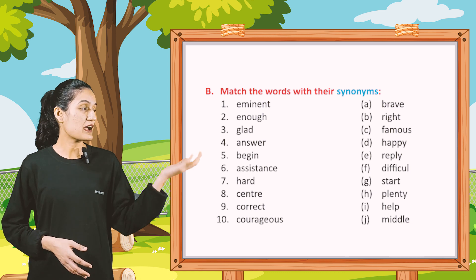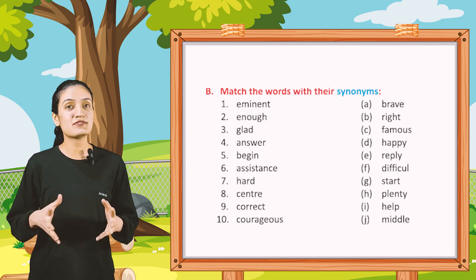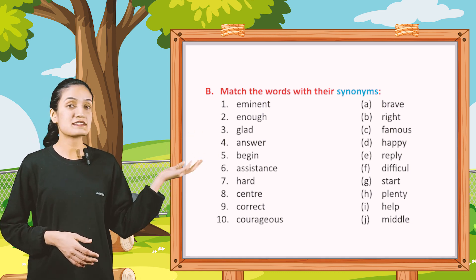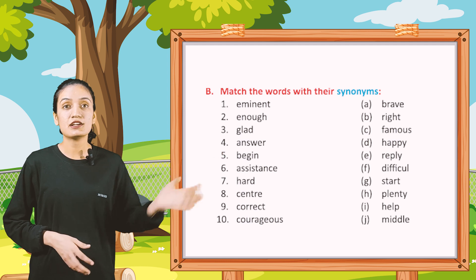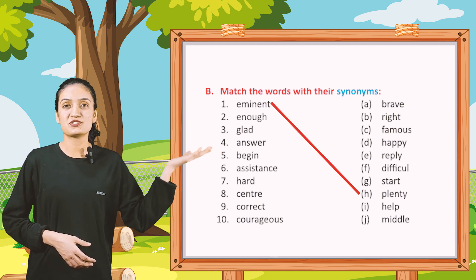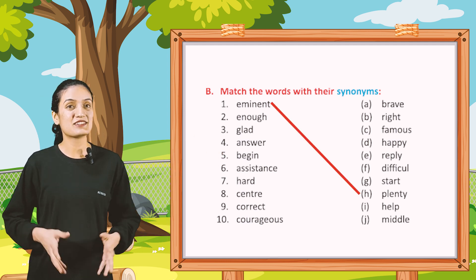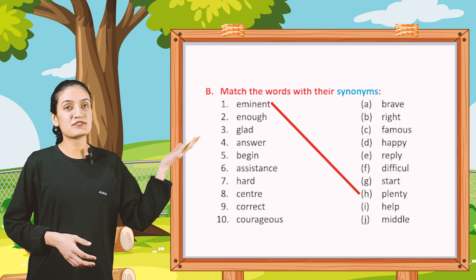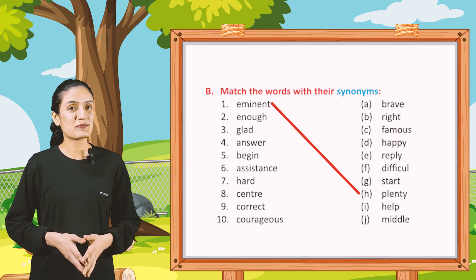Now part B. Match the words with their synonyms. First: Eminent — its synonym will be H, Plenty. So in this way match the words with their synonyms.